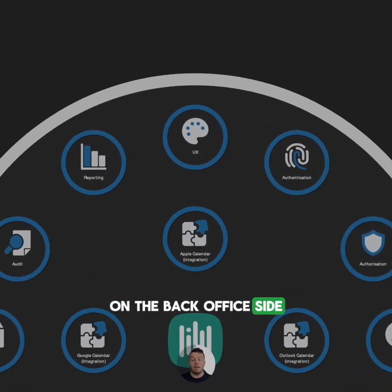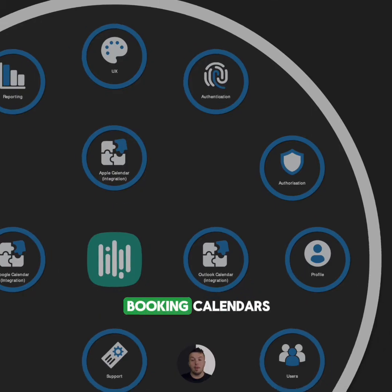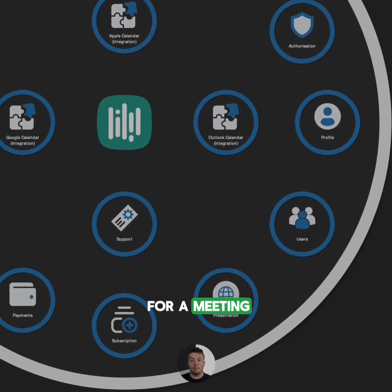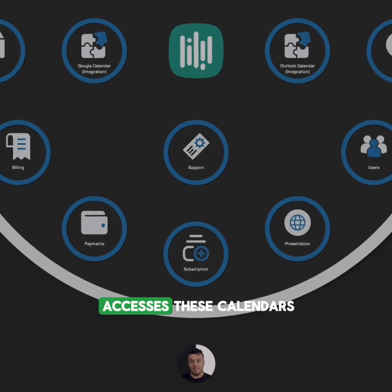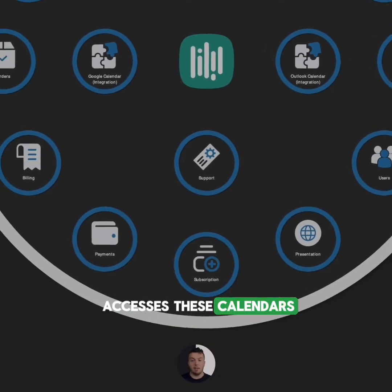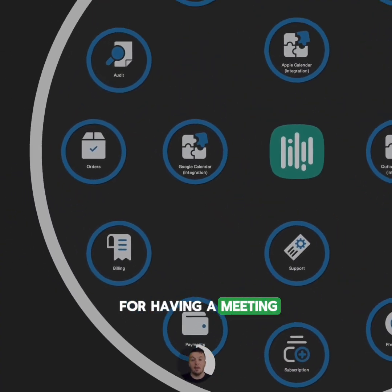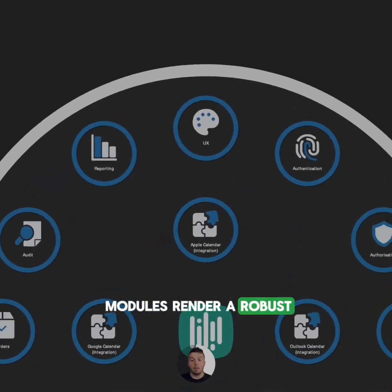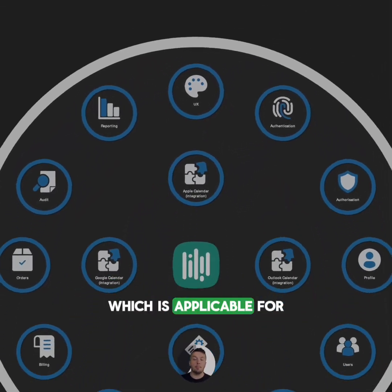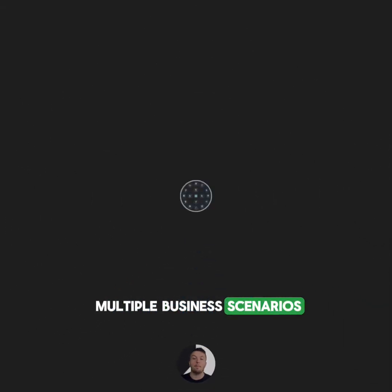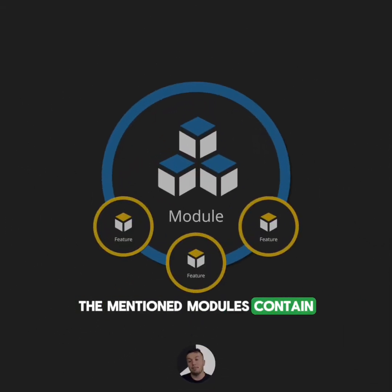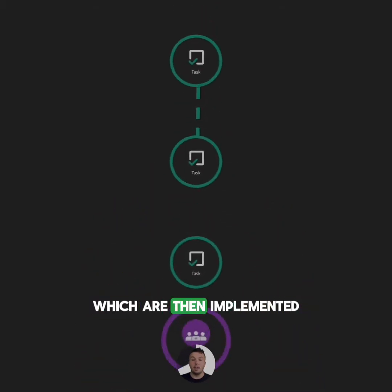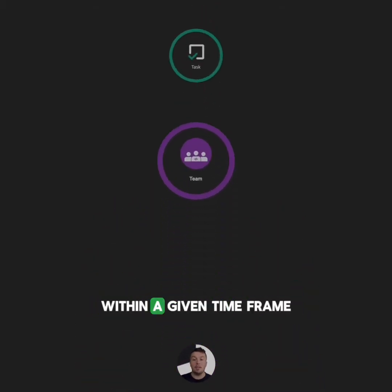On the back office side, specialized agents can create booking calendars for certain team members that can be solicited for a meeting. The regular user then accesses these calendars and selects a slot for having a meeting at a precise date and time. The integration of these modules renders a robust and efficient scheduling solution applicable for multiple business scenarios. These modules contain features that can be deconstructed into tasks, which are then implemented by a development team within a given time frame.